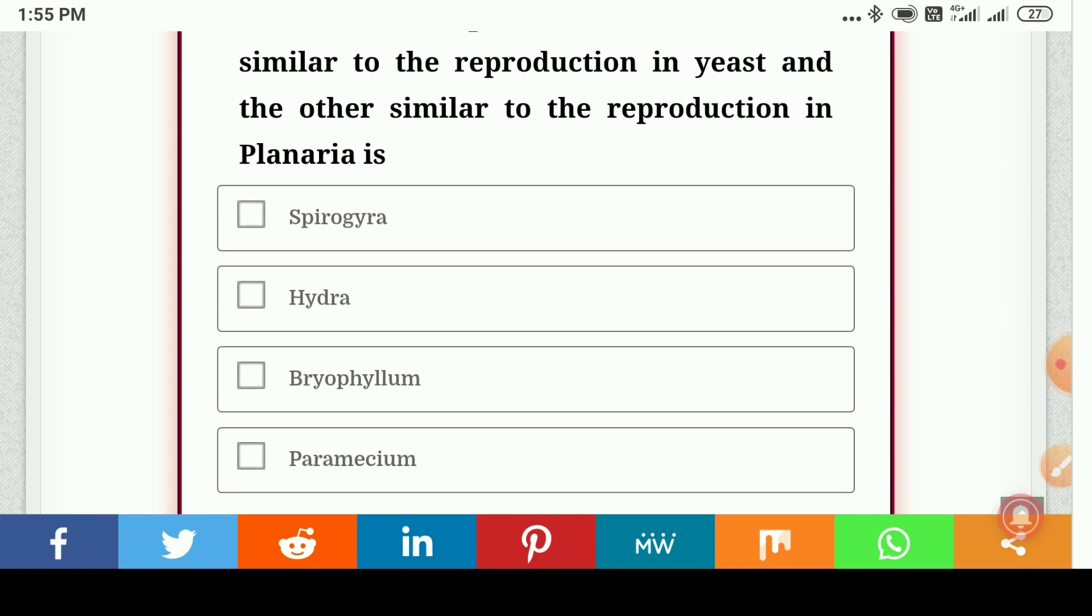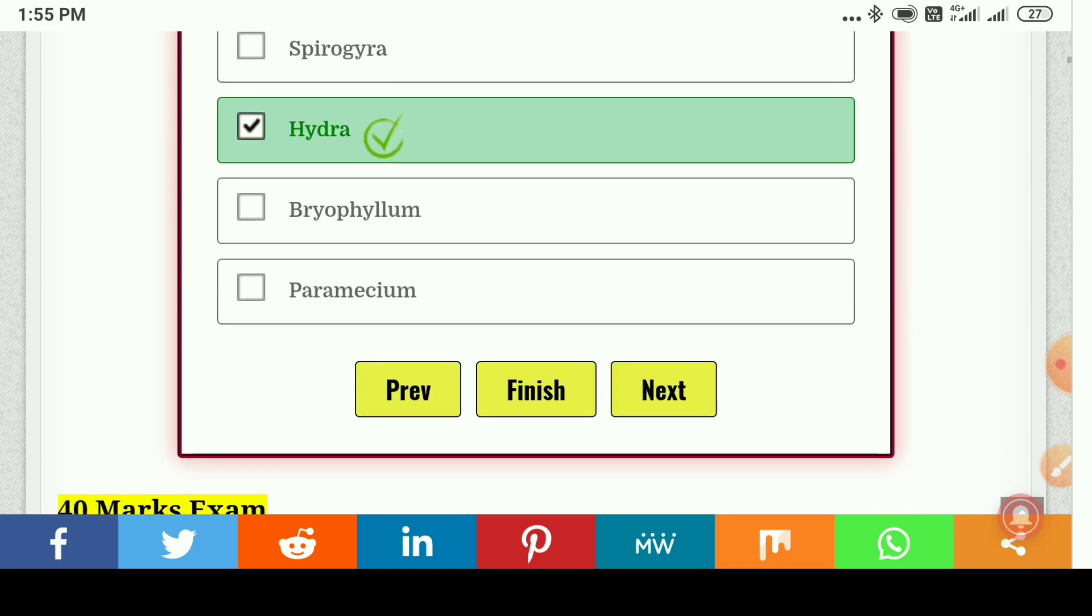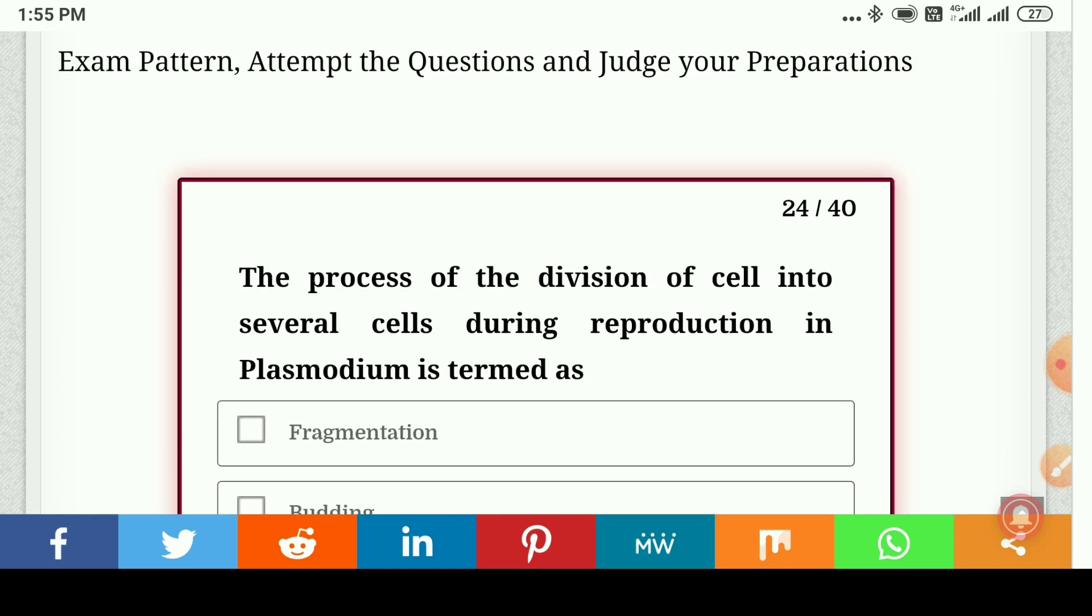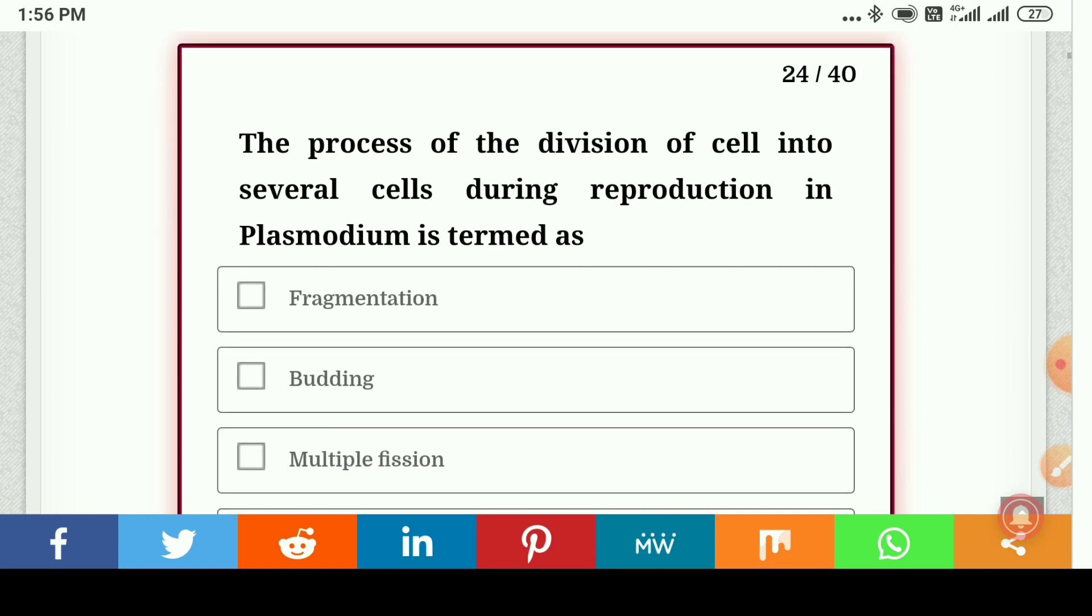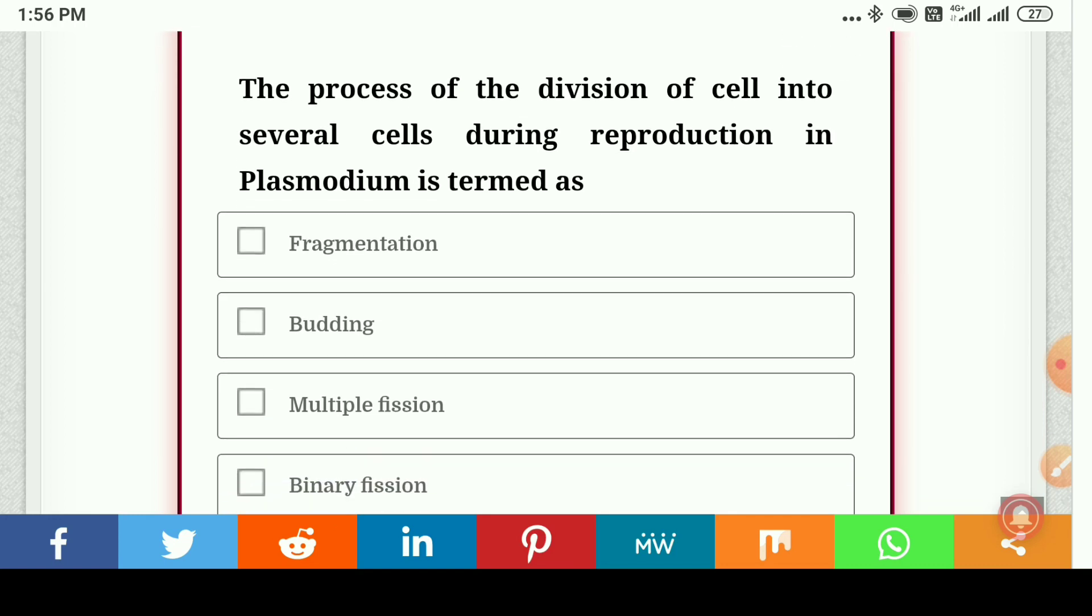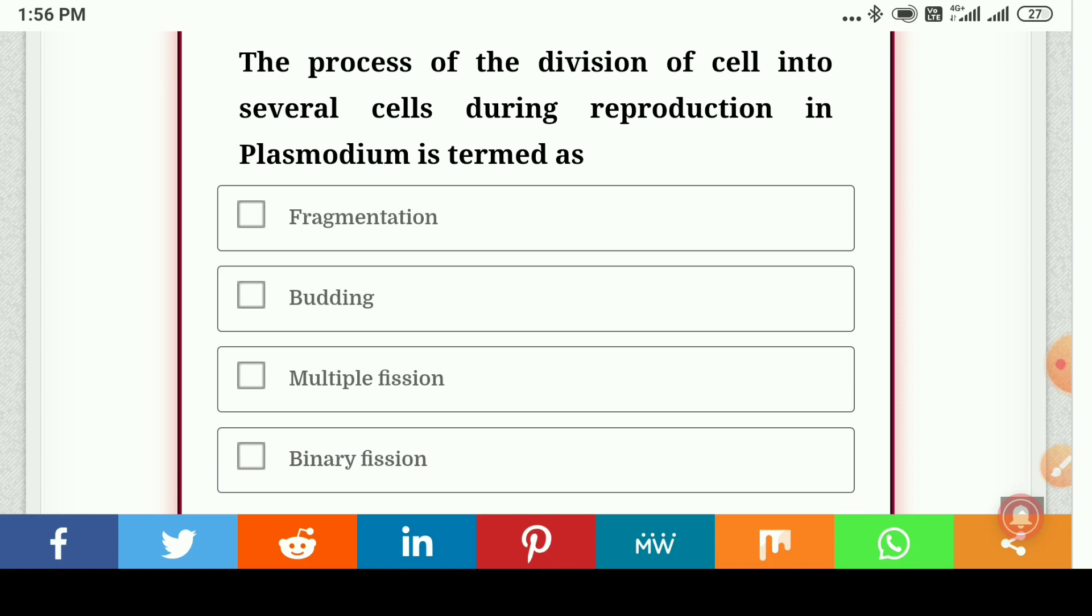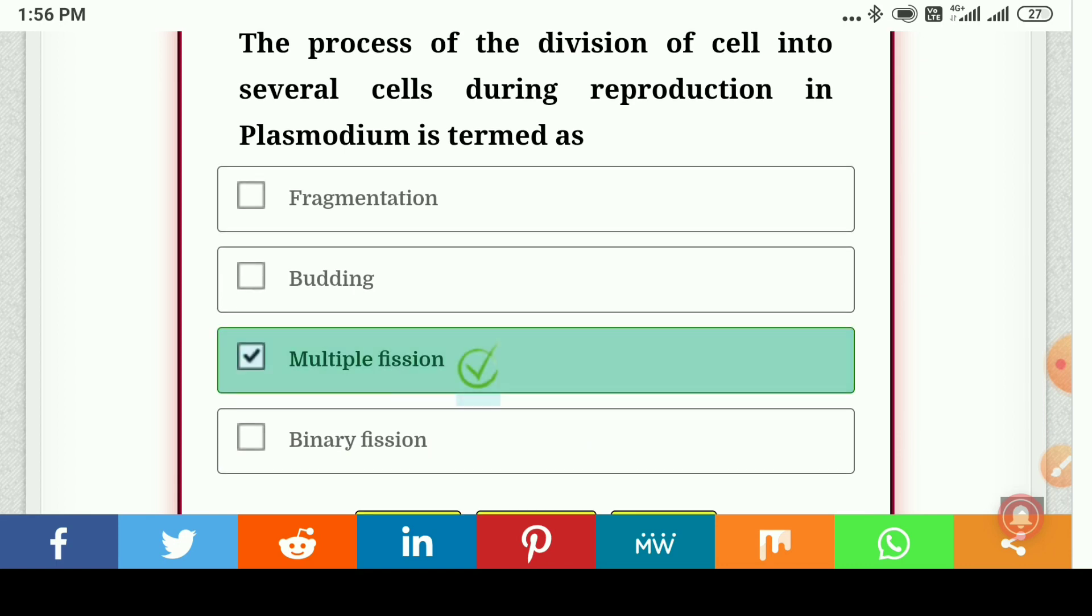The process of division of cell into several cells during reproduction in Plasmodium is termed as... multiple fission is the correct answer.